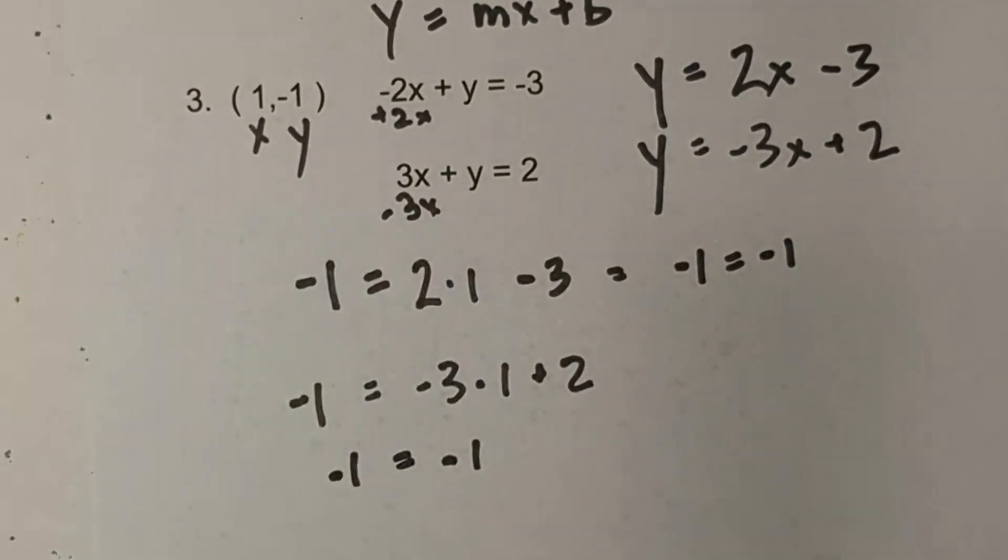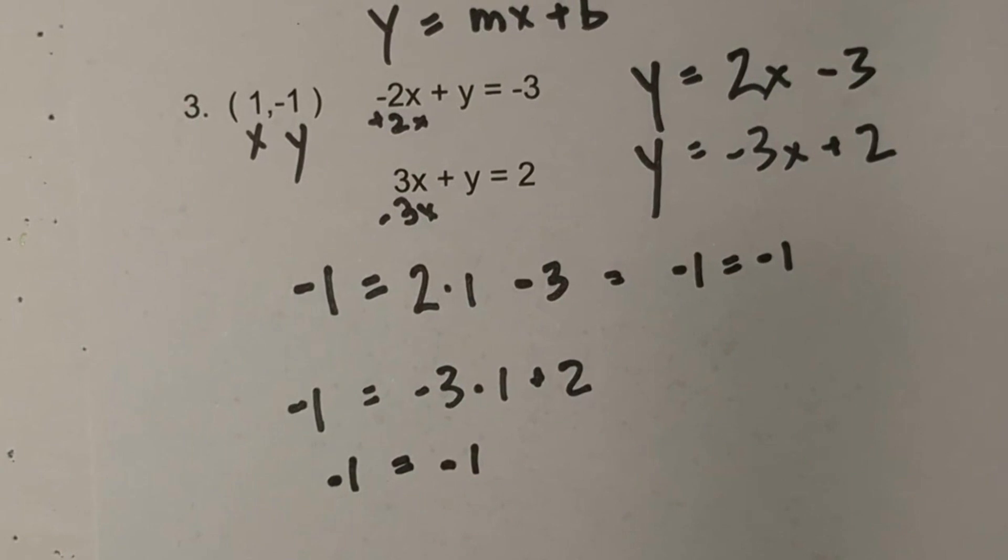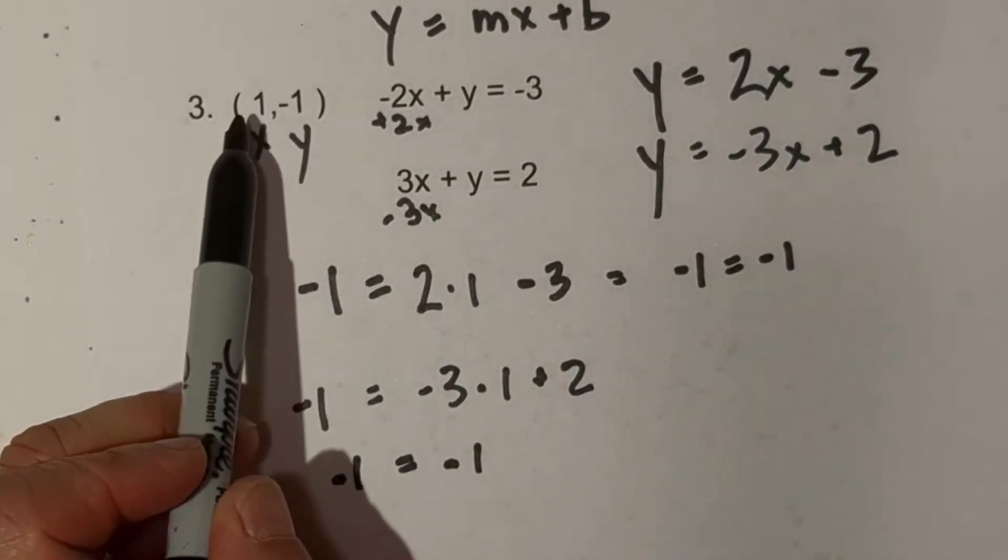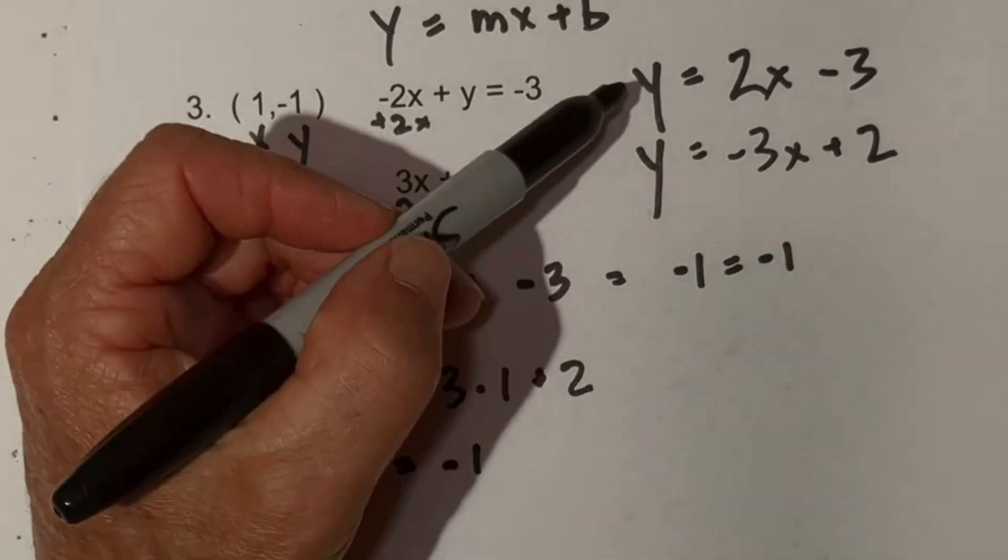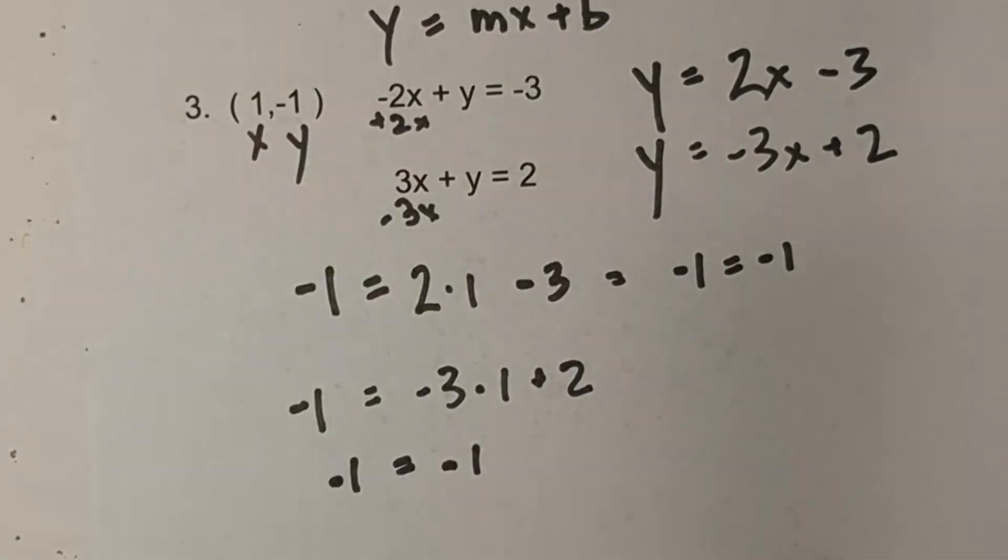So for this example, the ordered pair (1, -1) is a solution to this system of equations.